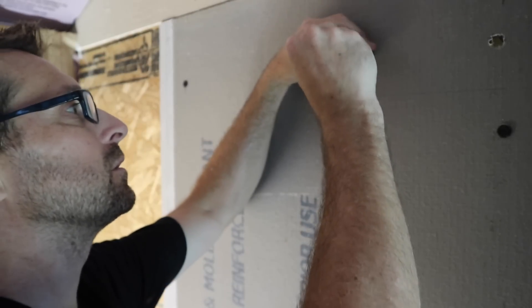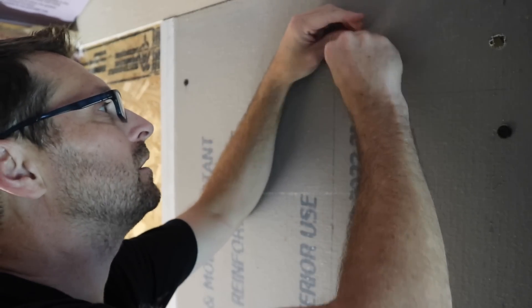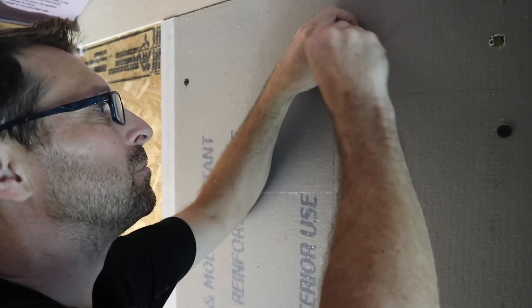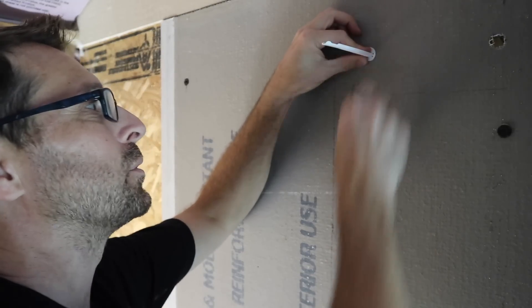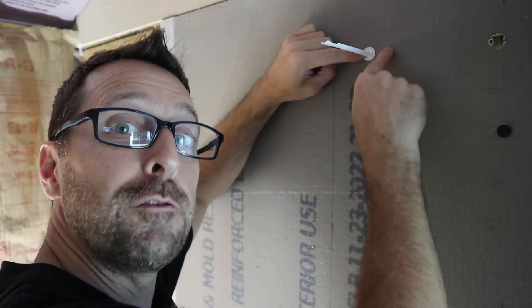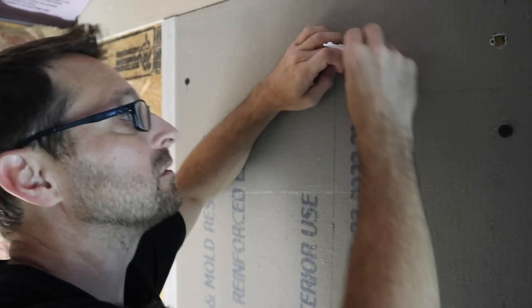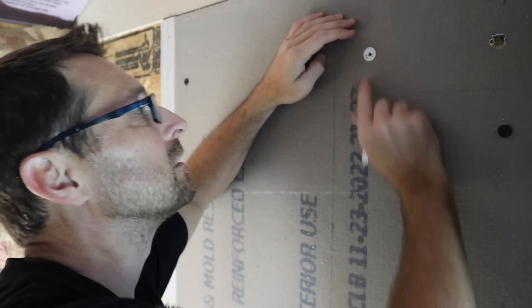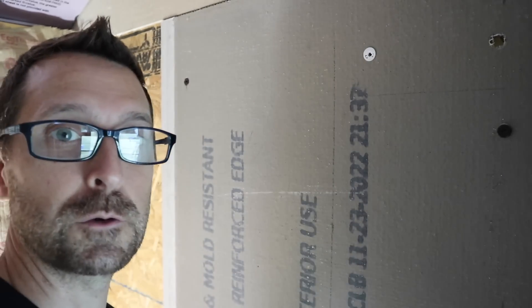For these toggle bolts, all we're going to do is shove them through the wall and then pull back on this portion. And then it will flip that toggle on the other side of the wall and secure it. And then all you do is break that off, put the screw in.